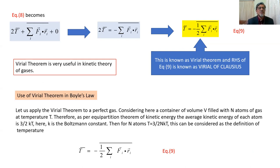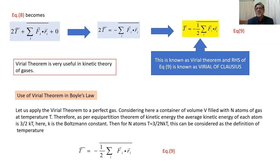In that case, equation eight gives: two times the time average of T plus the time average of summation Fi dot Ri equals zero — note there is a misprint; it should equal zero, not plus zero. Rearranging, the time average of T equals minus one-half summation Fi dot Ri. This is the Virial Theorem, and the right-hand side is known as the virial of Clausius, given in honor of Rudolf Clausius.